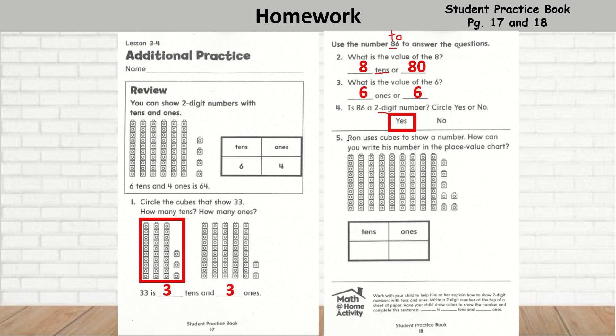Number five, Ron uses the cubes to show the number. How can you write this number in a place value chart? Well, we're going to count the tens. So one ten, two ten, three tens, four tens, five tens, six tens, seven tens, eight tens, nine tens. So the tens is nine. How many ones do we have? One, two, three, four, five, six, seven. So your answer should be 97.